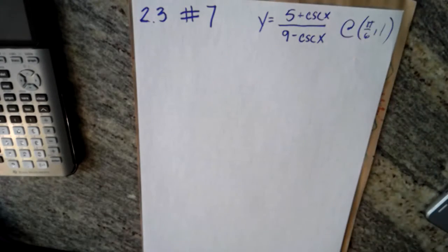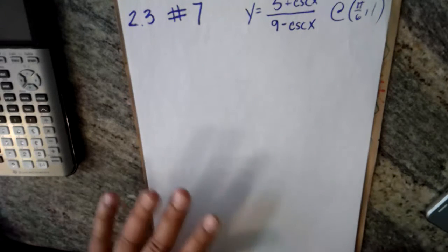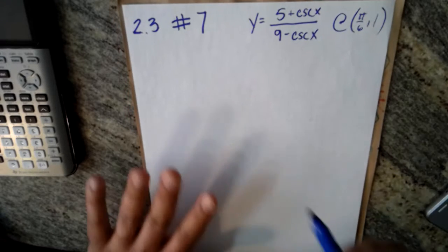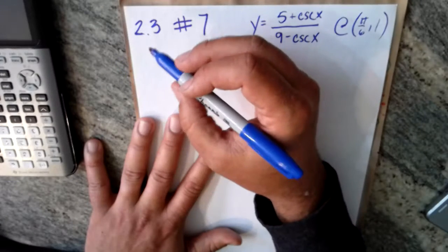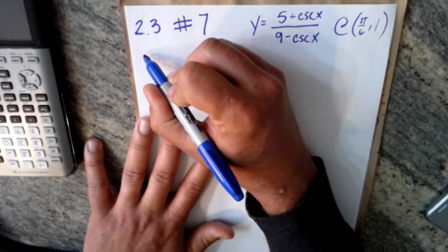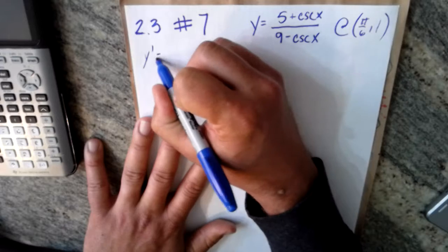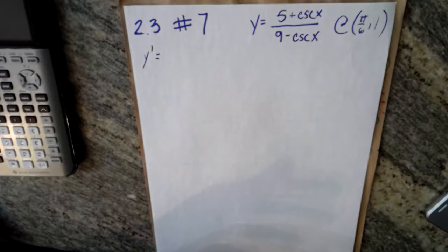Most importantly, this problem is just testing to see whether or not we are tough enough to stick it out. Believe me, I've gone through times where I have quit on these types of problems, but the algebra is tough so you just got to go for it. Alright, so y prime is low d high minus high d low all over low low.